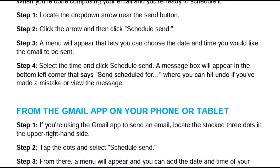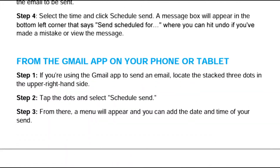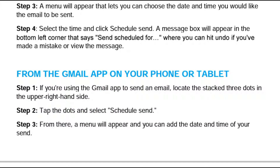Select the time and click 'Schedule Send'. A message box will appear in the bottom left corner that says 'Send Scheduled for', where you can hit undo if you have made a mistake, or view the message.